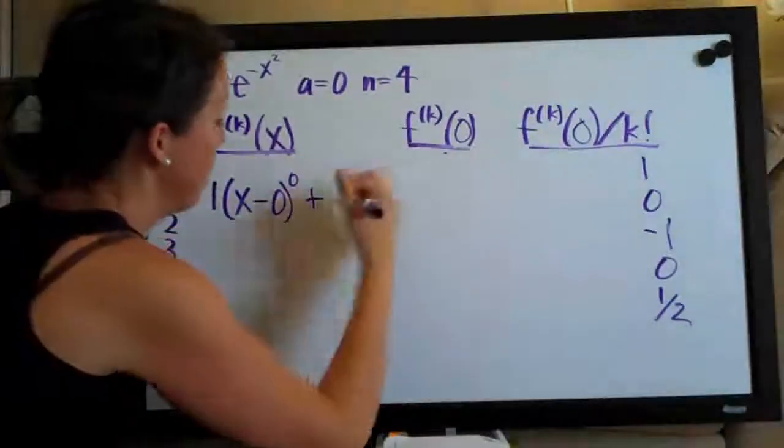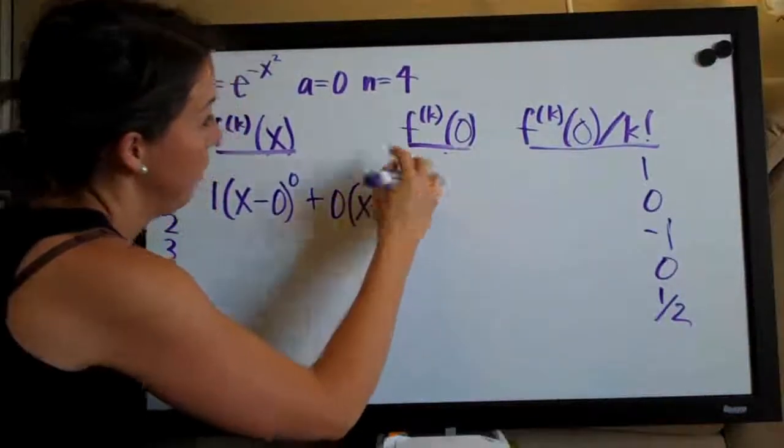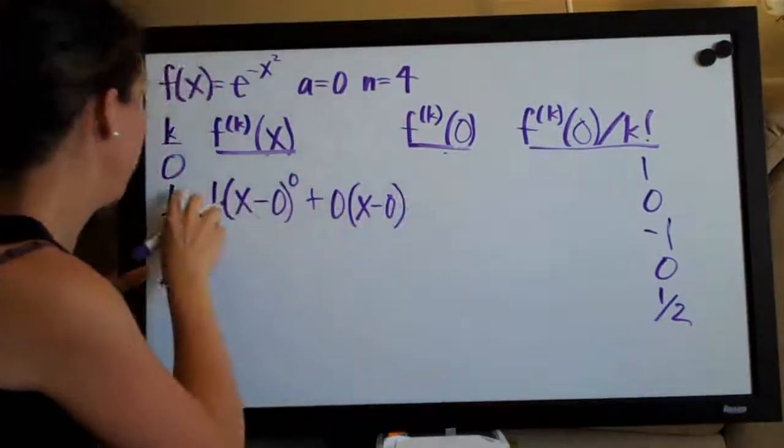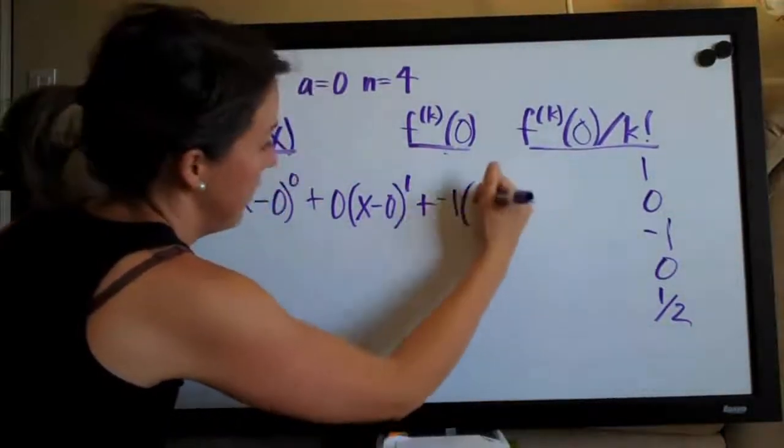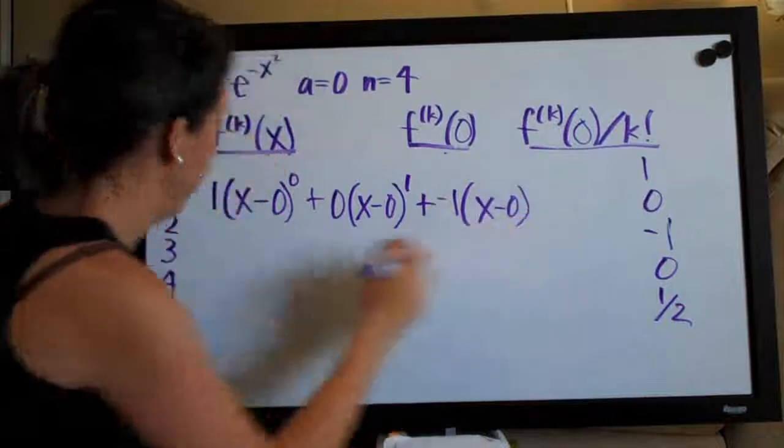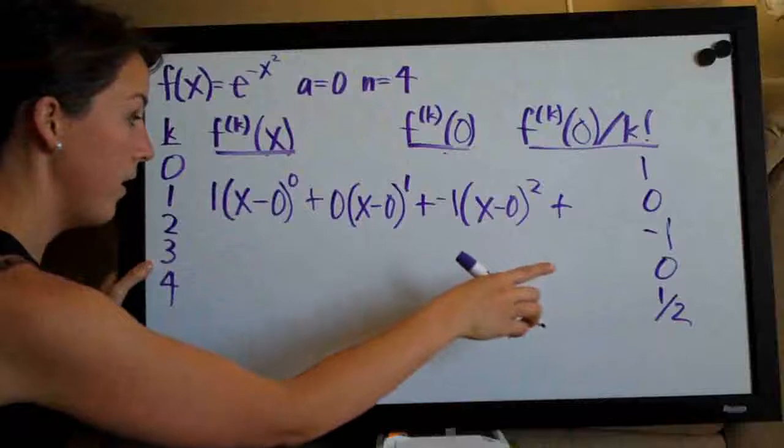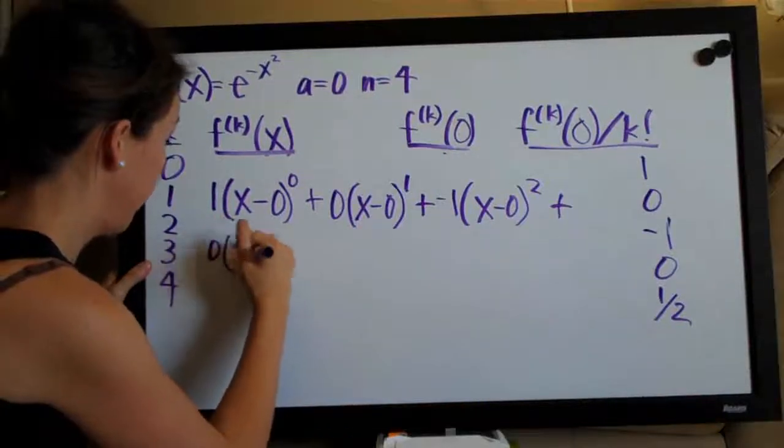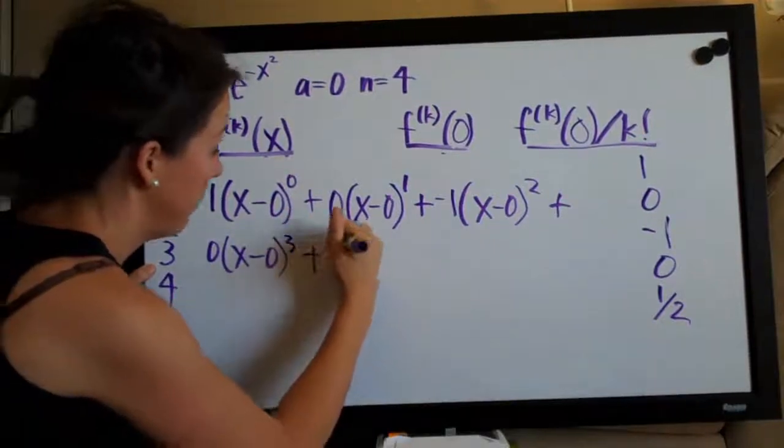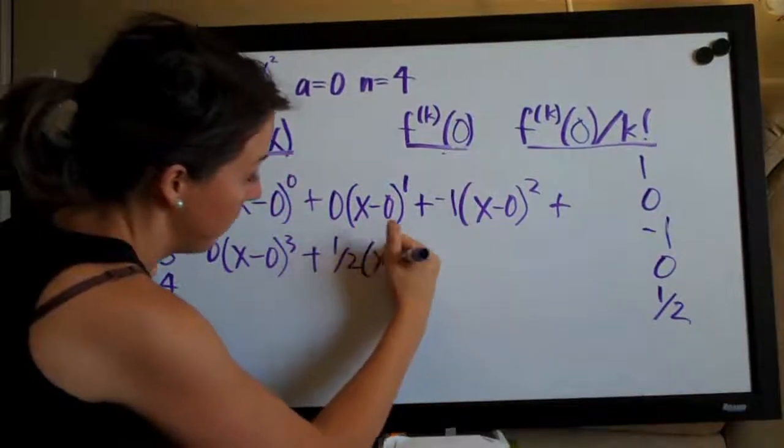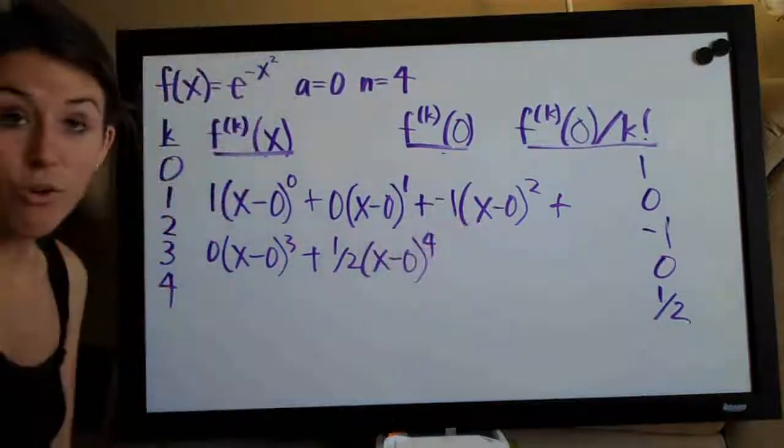Plus, here, negative one, times x minus zero, raised to the two. Plus, zero times x minus zero, raised to the three. Plus, one half times x minus zero, raised to the four. And that's our whole Taylor polynomial.